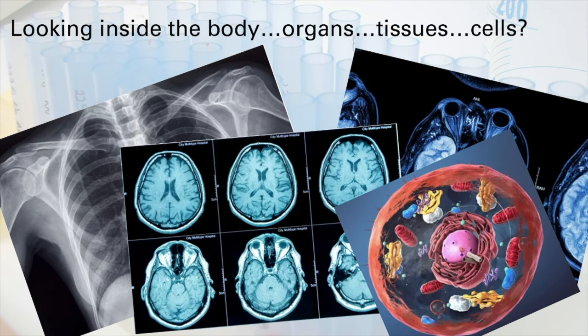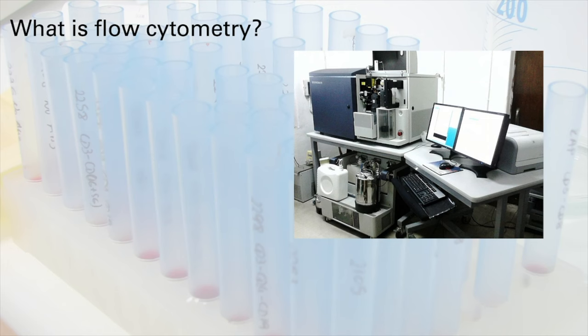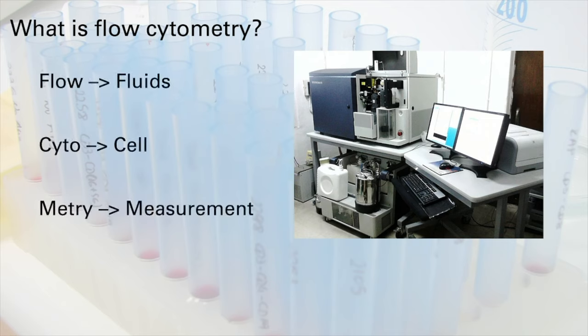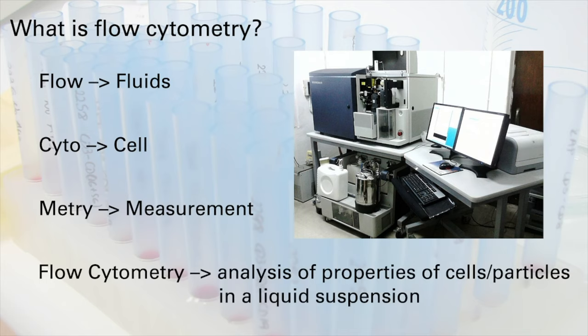So what exactly is flow cytometry? If we break flow cytometry down into three component parts, flow relates to fluids, cyto means cell, and metry refers to measurements. So flow cytometry as a whole is the analysis of the properties of cells or particles that are suspended in a liquid.